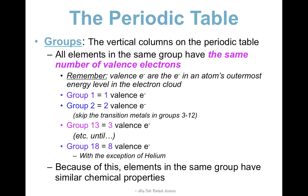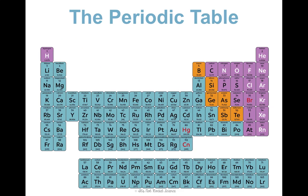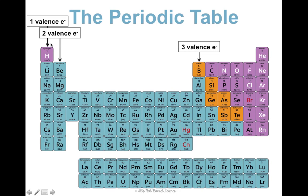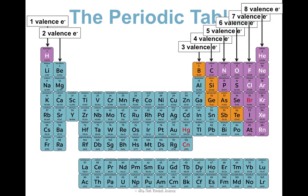Because they have the same number of valence electrons, this gives elements in the same group a lot of the same chemical properties, since it affects how they're going to bond. If you have a periodic table you want to label for studying purposes, group one has one valence electron, group two has two, then three, four, five, six, seven, and eight — again with the exception of helium, which we'll talk about in a bit.